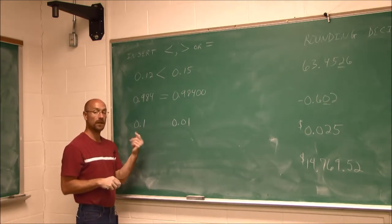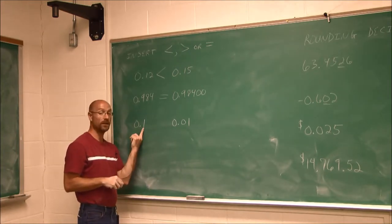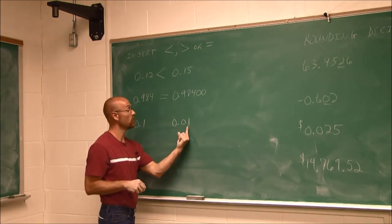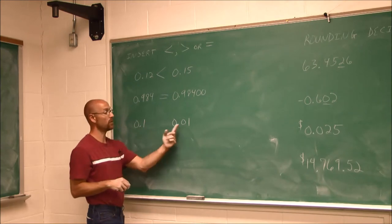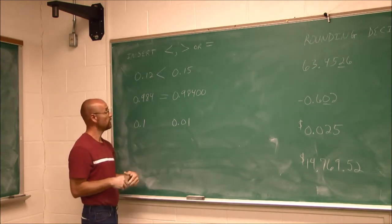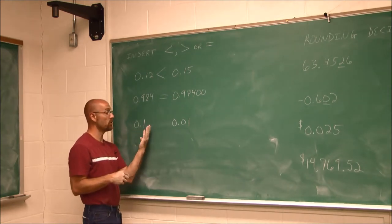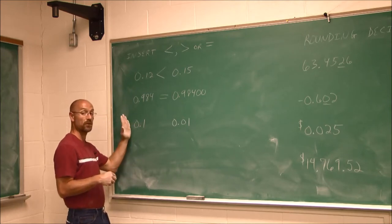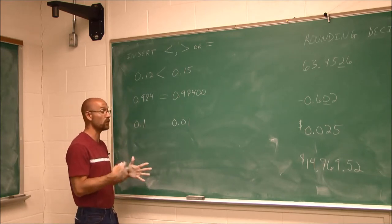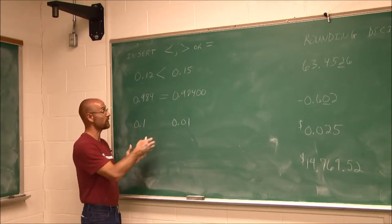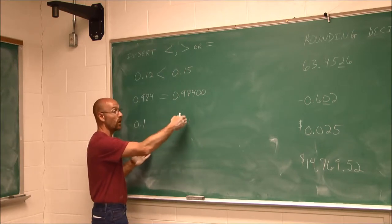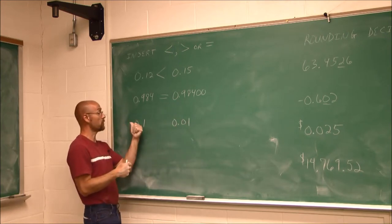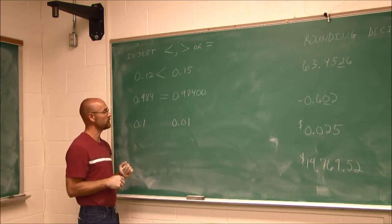What about these? Let's read them — this is 1 tenth. This is 1 one-hundredth. Now, as we move to the left near our decimal, the values are getting greater by a factor of 10. We talked about 1 tenth here and 1 one-hundredth there — we're dividing by a factor of 10 as we go right, and multiplying by a factor of 10 as we go left.